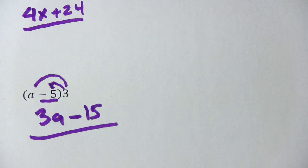So we have 3a minus 15 as our answer. So that's a little bit of work with the distributive property.